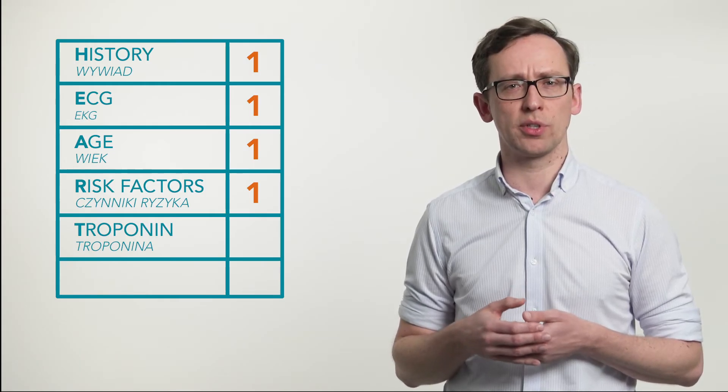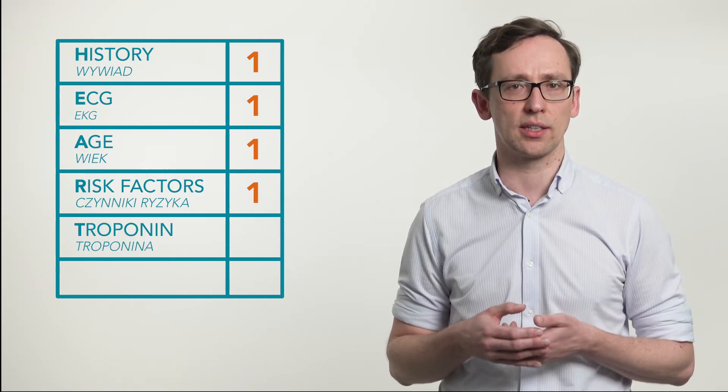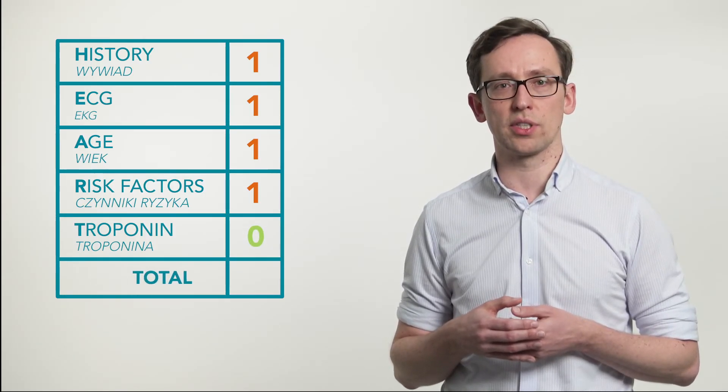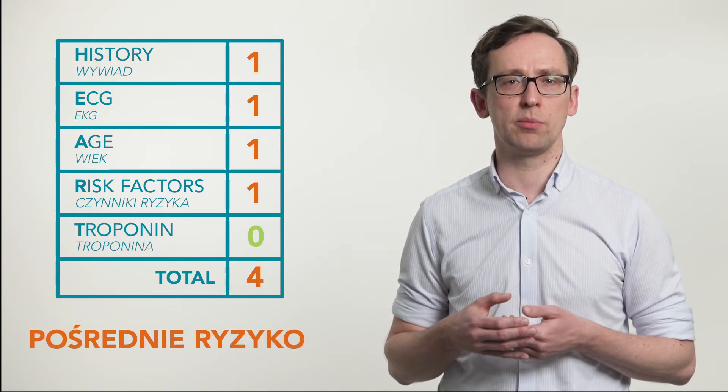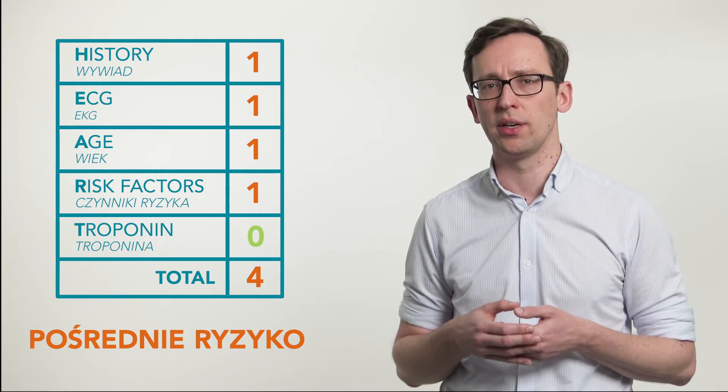And now, looking at the EKG, we can see that there is T-wave flattening in the precordial leads, so we also assign 1 point for the EKG. If we had an old EKG showing this was a new change, we could assign 2 points, as it may indicate new ischemia. Mrs. Kowalska is 54 years old, so she gets 1 point for age. In terms of risk factors, the patient's father had a heart attack at 58, and she has high cholesterol. The patient smoked, but because she quit smoking more than 90 days ago, we do not count this as a risk factor. This leaves 2 risk factors, so we assign 1 point.